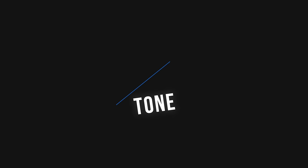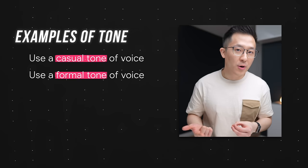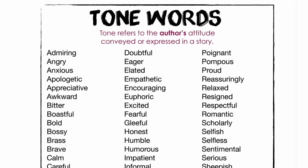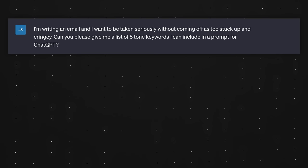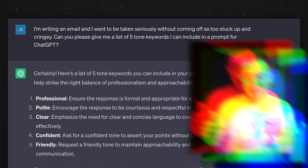Let's quickly go through the last component, tone. The good news is tone is easy to understand — use a casual or formal tone of voice, give a witty output, show enthusiasm, sound pessimistic. The bad news is we're usually not great at recalling thousands of potential adjectives at a moment's notice. So here's a pro tip: tell ChatGPT the feeling you're going for. For example, say 'I'm writing an email to a team I haven't worked with and I want to be taken seriously without coming off as too stuck up and cringy — give me five tone keywords I can include in a prompt.' Then use those keywords, like 'clear and concise language, friendly yet confident tone.'